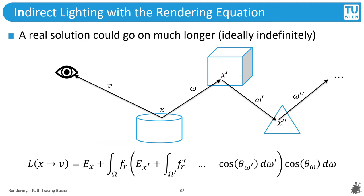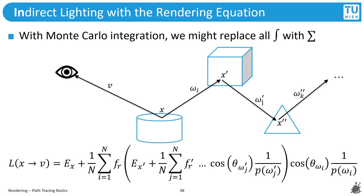In path tracing, a path can go on much longer — there can be an arbitrary number of bounces, but the method always stays the same: trace rays, identify hit points, accumulate emitted light, multiply by the right material terms and cosine factors, and keep bouncing. The recursive approach is straightforward to put into code. We replace each integral on our path with Monte Carlo integration, which adds additional sample weights. A justified question is how many samples to use in each individual Monte Carlo sum.